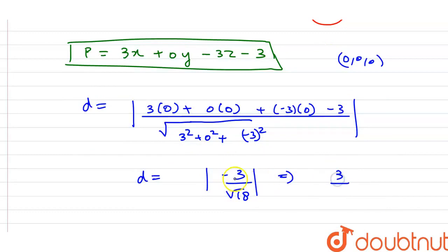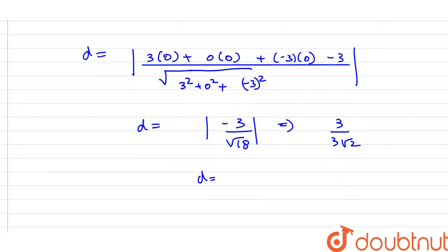The numerator is minus 3, denominator is 9 plus 9 equals 18. So we have 3 upon 3 root 2. The distance is equal to 1 by root 2. This is the final answer. Thank you friends.